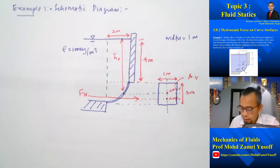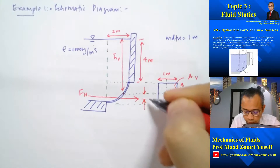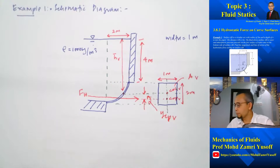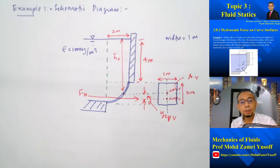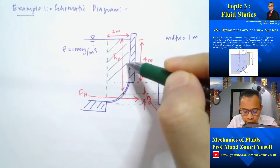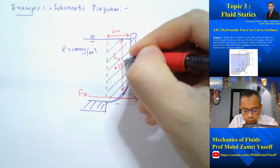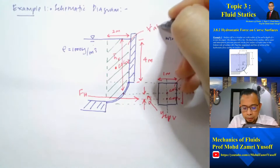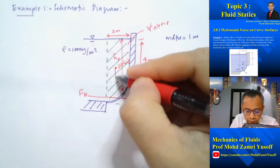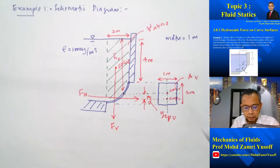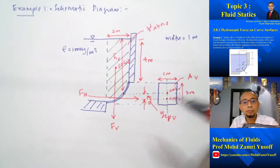The distance from the free surface to the centroid is our Ȳ_CV vertical. The horizontal component of the hydrostatic force acts through the center of pressure on the vertical projection. The vertical component of the hydrostatic force equals the weight of the fluid above the curved surface, acting directly downward through the center of gravity of that volume.